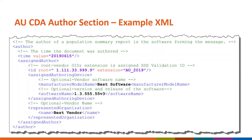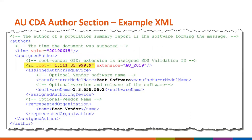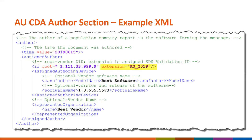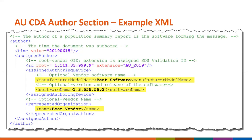This slide shows an example of the XML coding of the author field for the AU CDA. The ID root highlighted must contain your vendor OID. The extension highlighted must contain the SDS validation ID, which will be provided by the NHSN team after confirmation of successful AU SDS validation. Vendor name, vendor software name, vendor version, and release are currently optional fields, but having this information will streamline troubleshooting of issues.